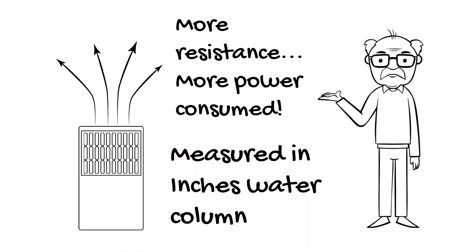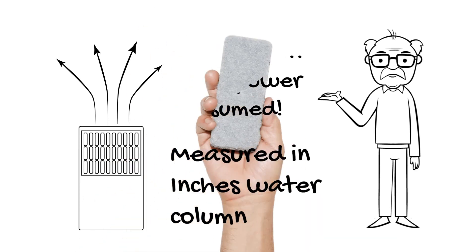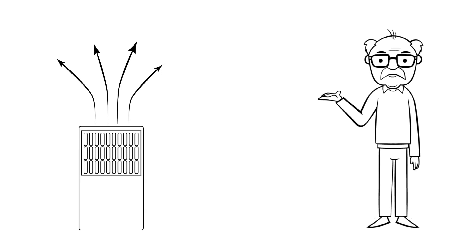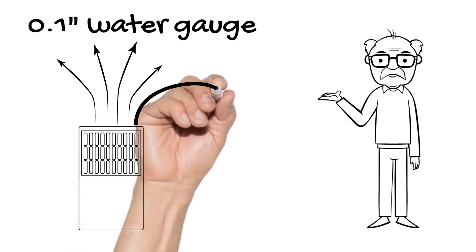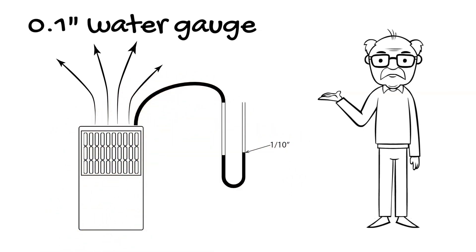This resistance is measured in inches water column. That is, the amount of pressure it takes to push a column of water up a tube. In the past, the test was made at 0.1 inches water column. That's not a lot of pressure, only one-tenth of an inch.